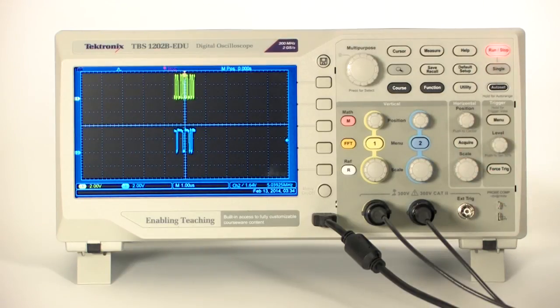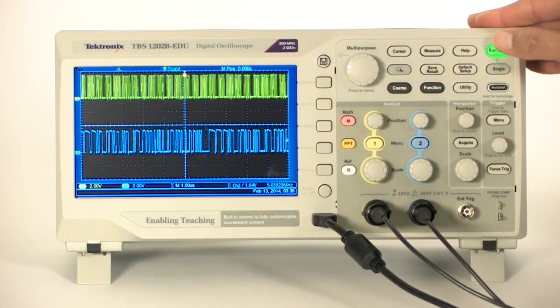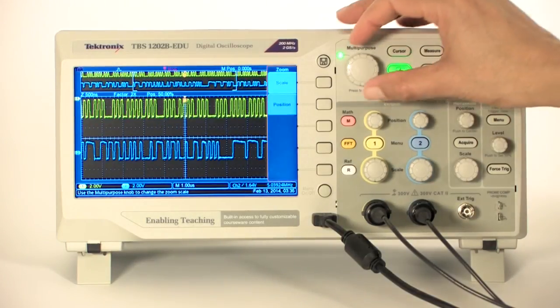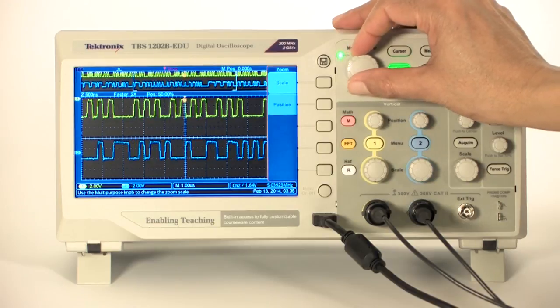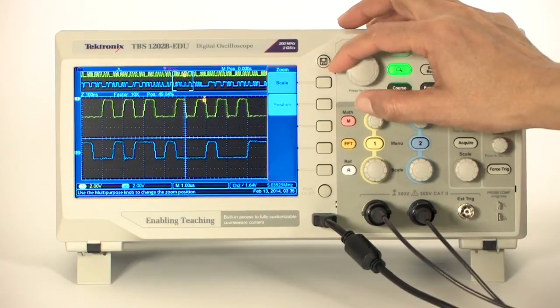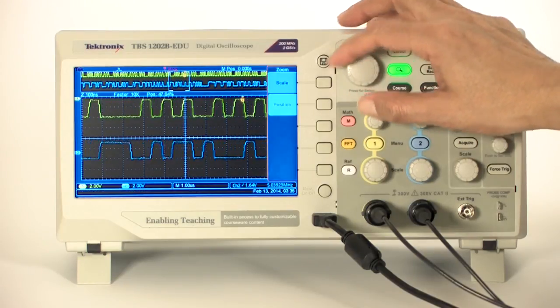To get a more dynamic picture of the digital signal, you can change the horizontal scale to acquire more data points and then use the magnifier controls to see more details. You can zoom in by up to 10 times the normal view and position the zoom window to any point on the waveform.